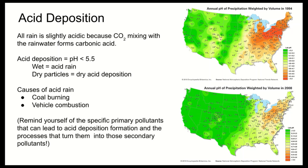Maps of acid rain in the United States show a real success story. In 1994, most of the country was experiencing some acid rain, with the mid-Atlantic especially hard hit — some areas recording pH as low as 4.1. By 2008, acid rain levels had significantly improved nationwide, though the east coast is still more affected. This makes sense: the coal belt is in Appalachia, coal-burning power plants are common on the east coast, and air moves west to east across the US.